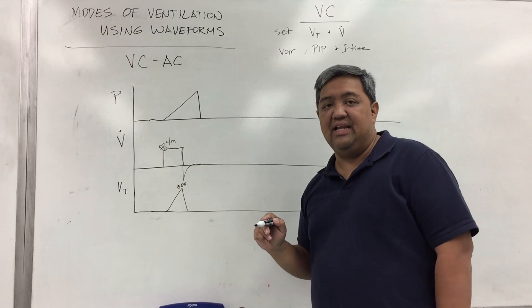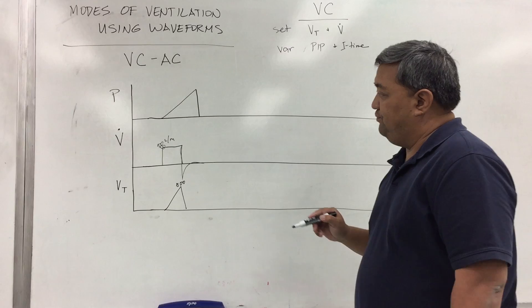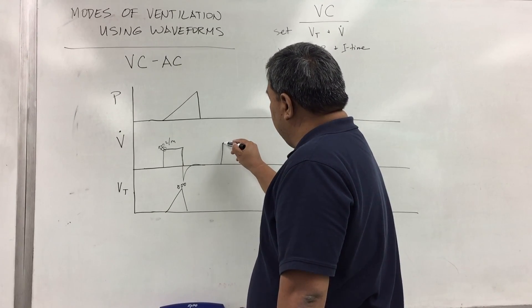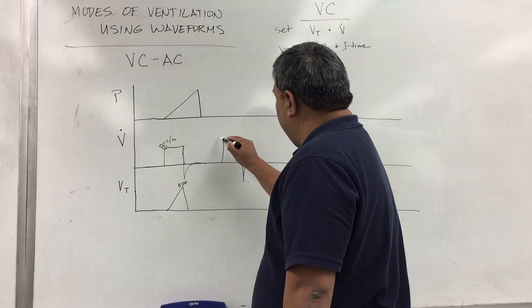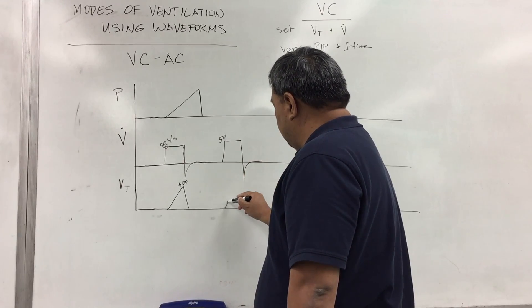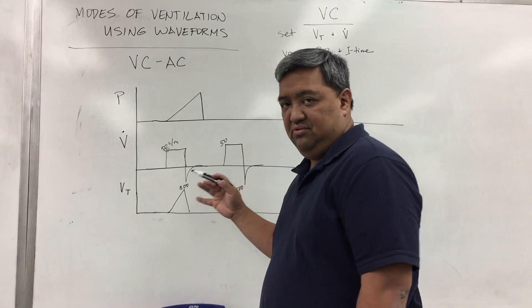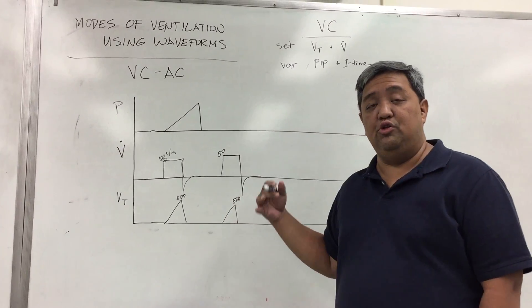And the pressure is always ascending, usually on the volume control. Again, you have a set flow at 50. Tidal volume is 500. The shapes may look different. That's why I'm putting a number so you'll notice they're the same.